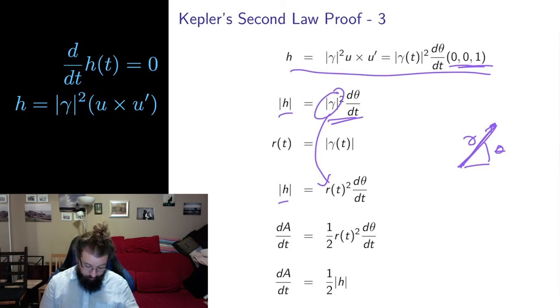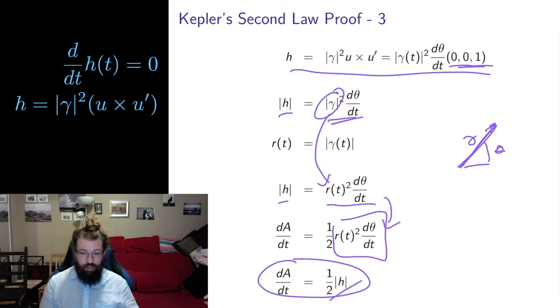But this was exactly, up to a factor of one-half, what I have two slides ago for the derivative of the area. So I can replace this piece with length of h. And I get that the change in the area over time is one-half times the length of the special vector h. And we know from the first lemma that h is a constant, so its length is a constant. So this thing is a constant, and that proves Kepler's second law.